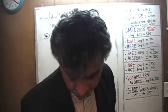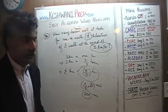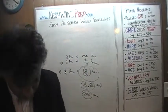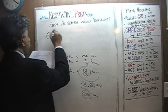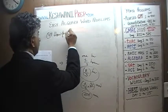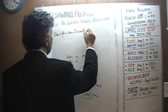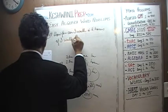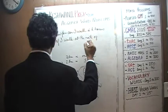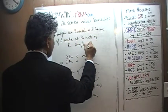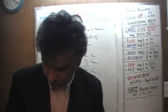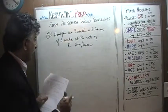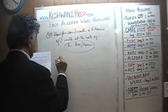Let's do number 37. The question asks: how far can I walk in H hours if I walk at the rate of K kilometers per hour? That's a simple question. Every hour I walk K kilometers — K kilometers per hour — so in one hour I can walk K kilometers.